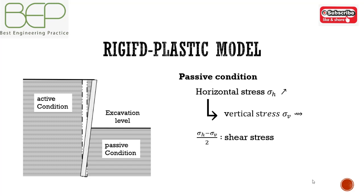As the wall moves away from the ground, the vertical stress is again more or less controlled by the supported soil mass. The reduction of the horizontal stress also leads to an increase of the shear stress in the soil. And finally, a soil failure occurs.